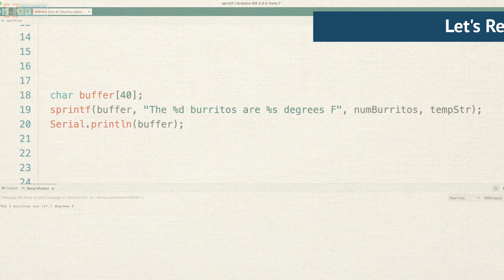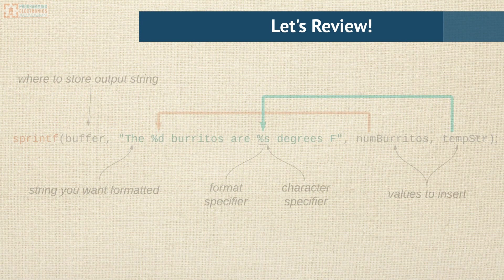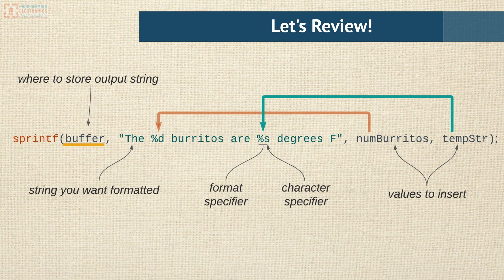Okay, let's do a quick review of what we've learned about sprintf. The first value that the sprintf function expects is a character buffer. This is where the formatted string will be stored. The second value in sprintf is the string you want to format with any format specifiers. The final arguments are the values you want to replace the format specifiers with.